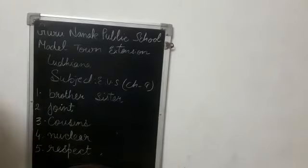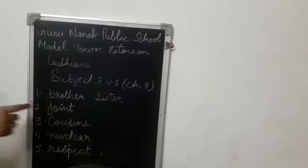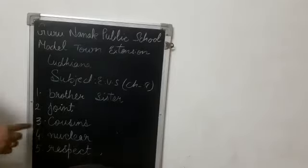Number 2, dash families have grandparents, parents, aunt, uncle and their children. Write joint. Number 3, children of uncle and aunt are called dash. Write cousins.